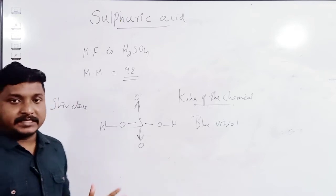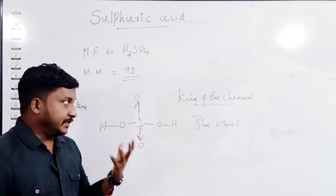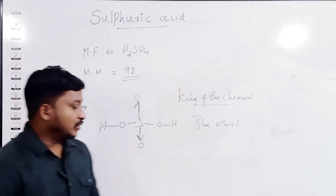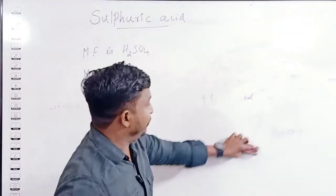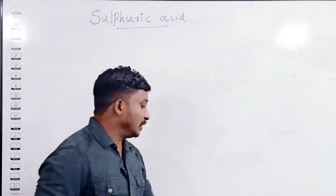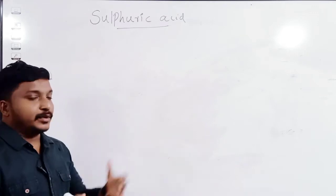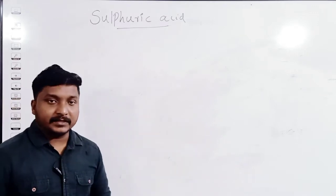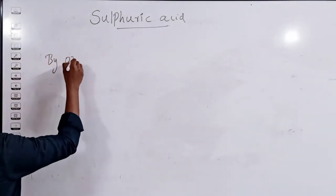From this chapter we will only study the laboratory preparation of sulfuric acid. The industrial method has been removed from the syllabus, so we will not study it. We can prepare sulfuric acid in the laboratory by the oxidation method.